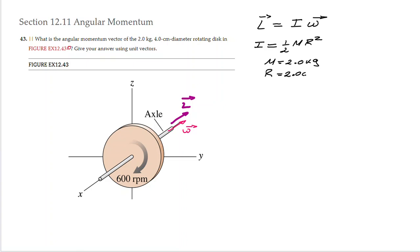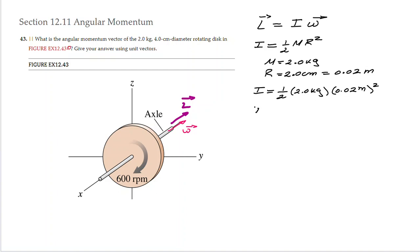The radius is 2.0 centimeters because the diameter is 4.0 cm, which equals 0.02 meters. We can now calculate the moment of inertia, which is 1/2 times 2.0 kg times (0.02 meters)². We are going to find that the moment of inertia for this solid disc is going to be 4.0 × 10⁻⁴ kg·m². So we have found the moment of inertia.